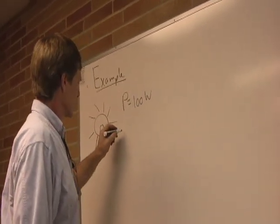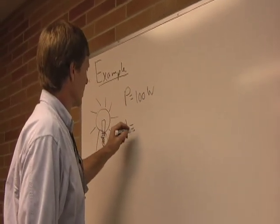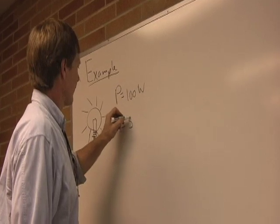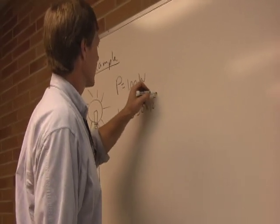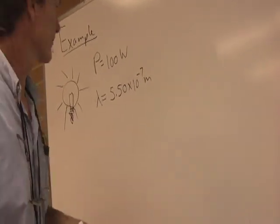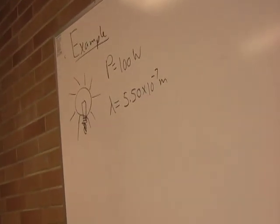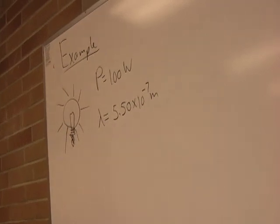And the power is 100 watts. And let's say the wavelength is 5.50 times 10 to the minus 7 meters. That's roughly green light. And first off, let's figure out the frequency.